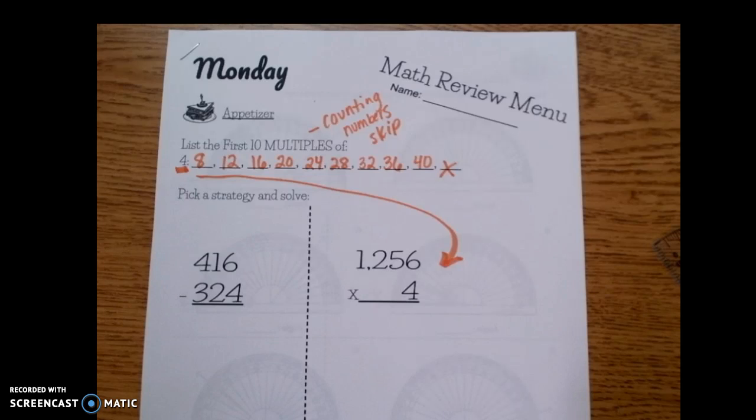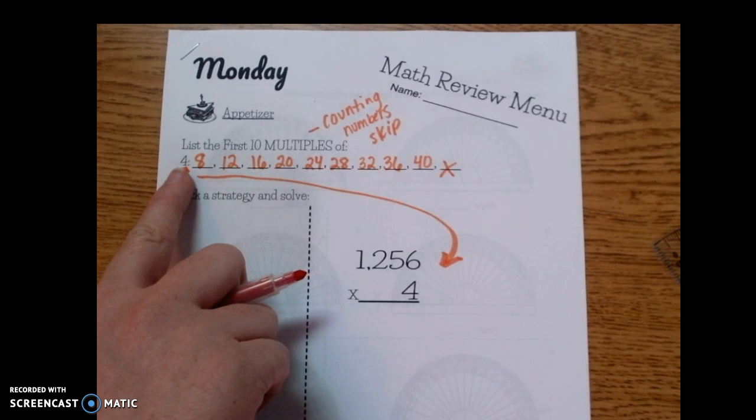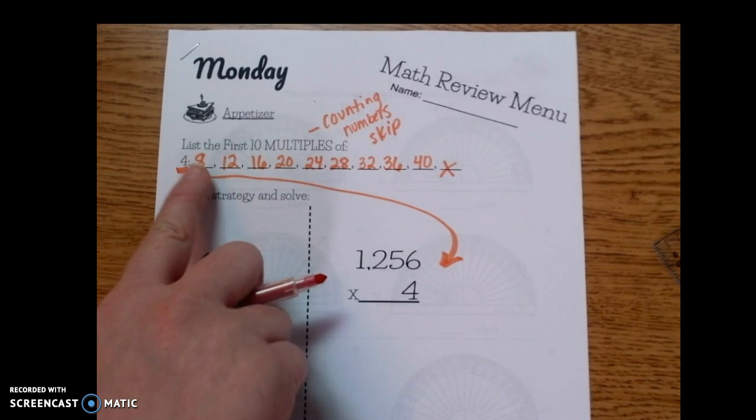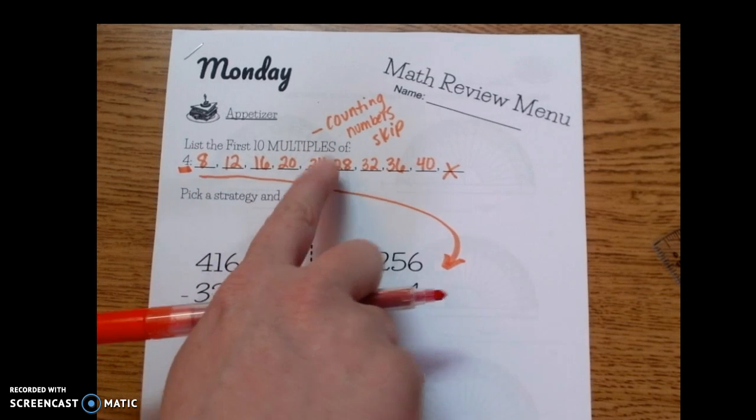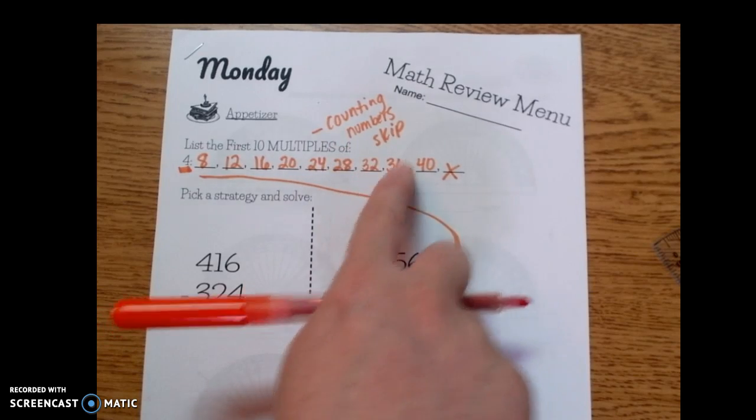Now we know that when you're counting by these, 1, 2, 3, 4, 5, that is 4 times 5. This is 4 times 6, 4 times 7, 4 times 8, 4 times 9, 4 times 10.